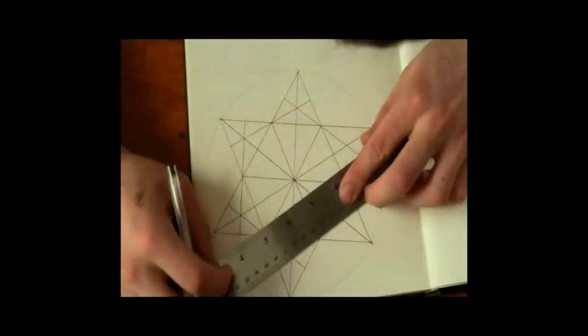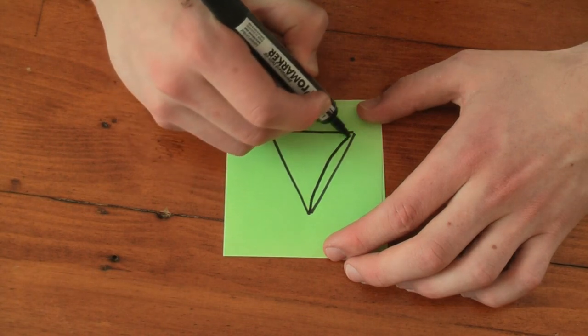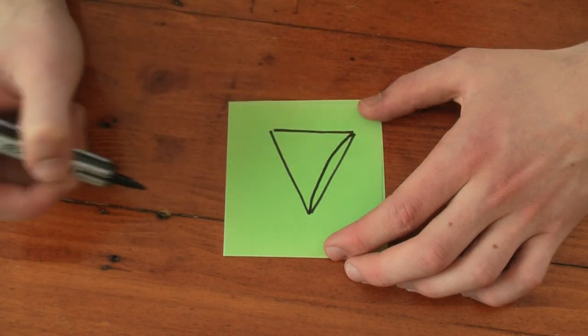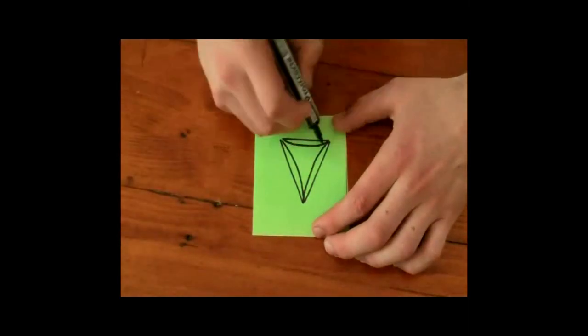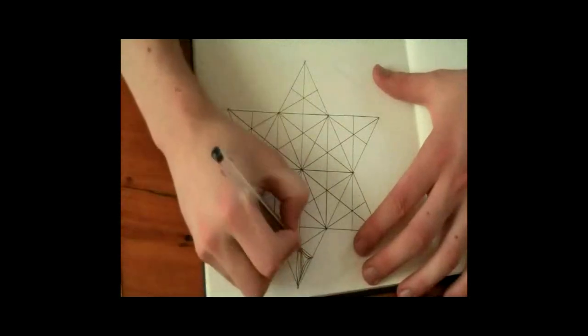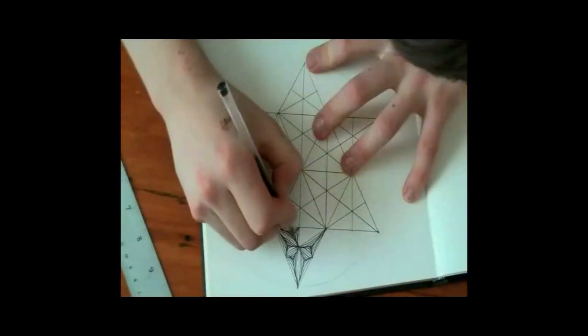Essentially what you're going to want to do is draw a curved line from corner to corner in the triangle and keep repeating until the pattern goes straight into the center. Now you repeat this for every single triangle you have created that makes up the Star of David.